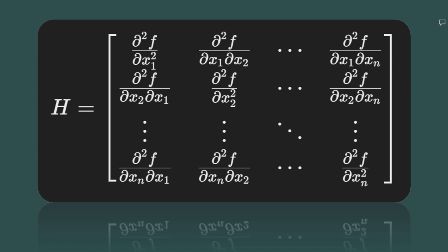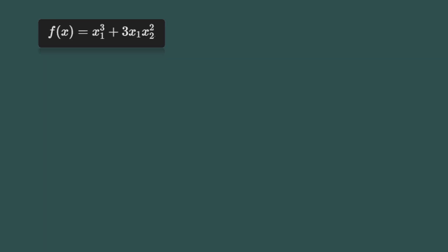The first row contains the second-order derivatives of the function with respect to x1, x2, and so on. Each subsequent row contains the second-order derivatives with respect to the other variables. Now, let's move on to a concrete example. Consider a simple scalar-valued function, f of x equals x1 cubed plus 3 times x1 times x2 squared. The Hessian matrix for this function is calculated by taking all possible second-order derivatives. We will compute it step-by-step in this example.